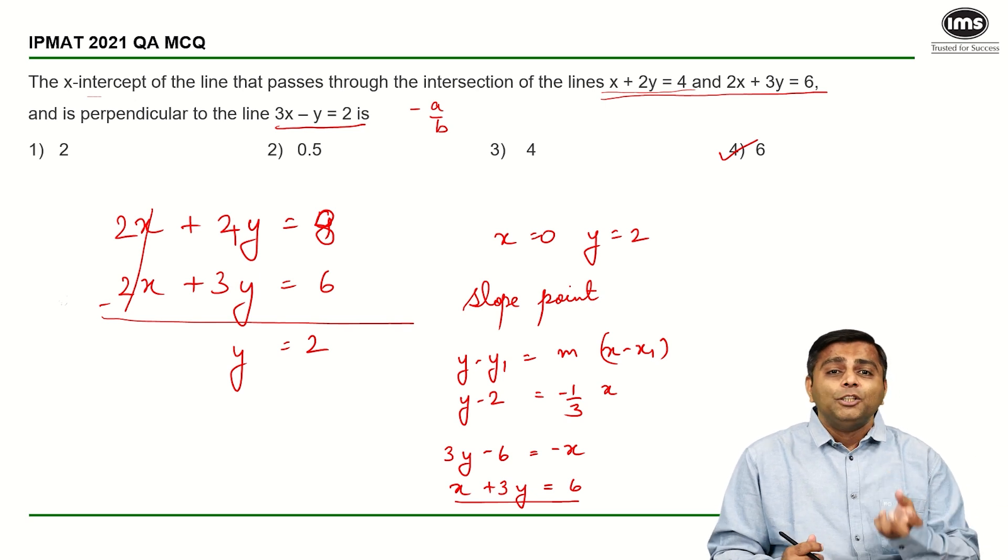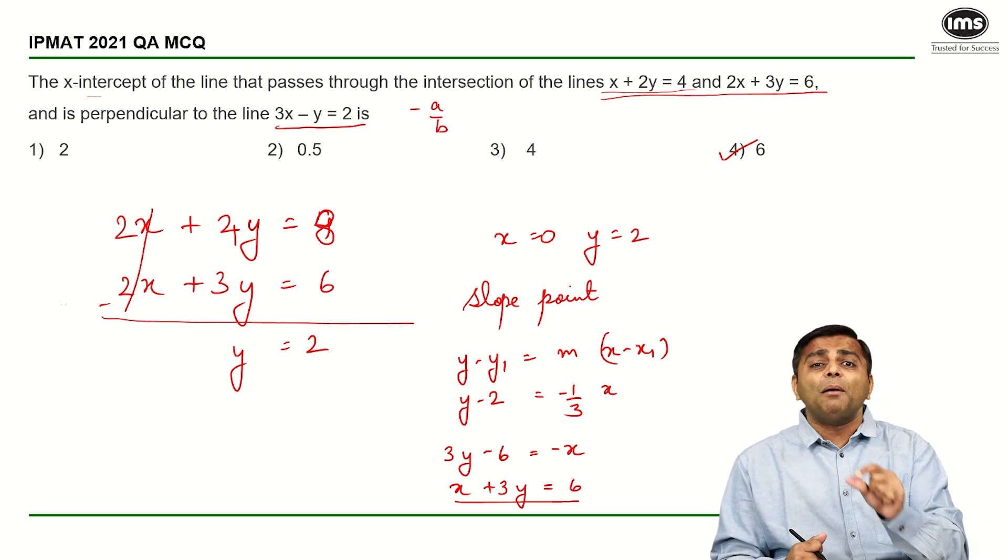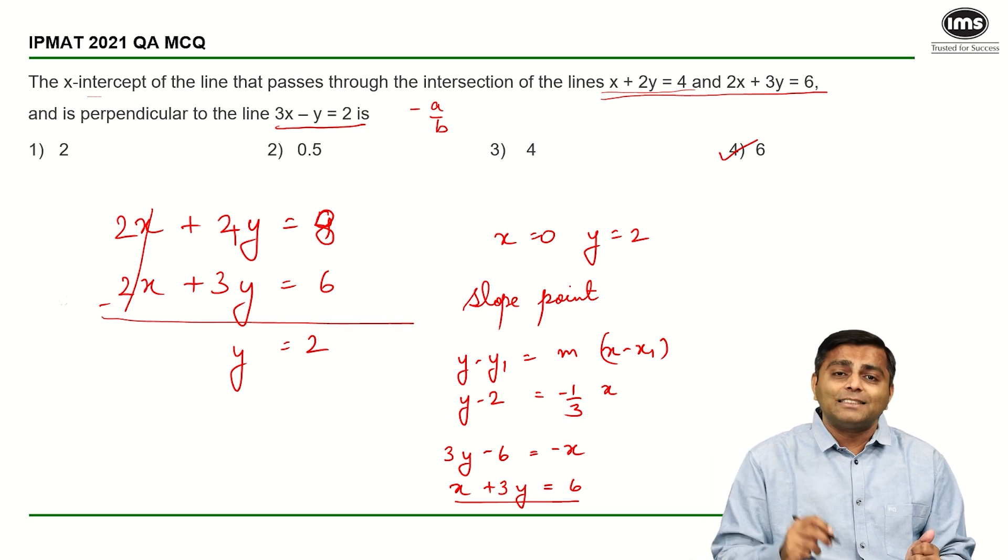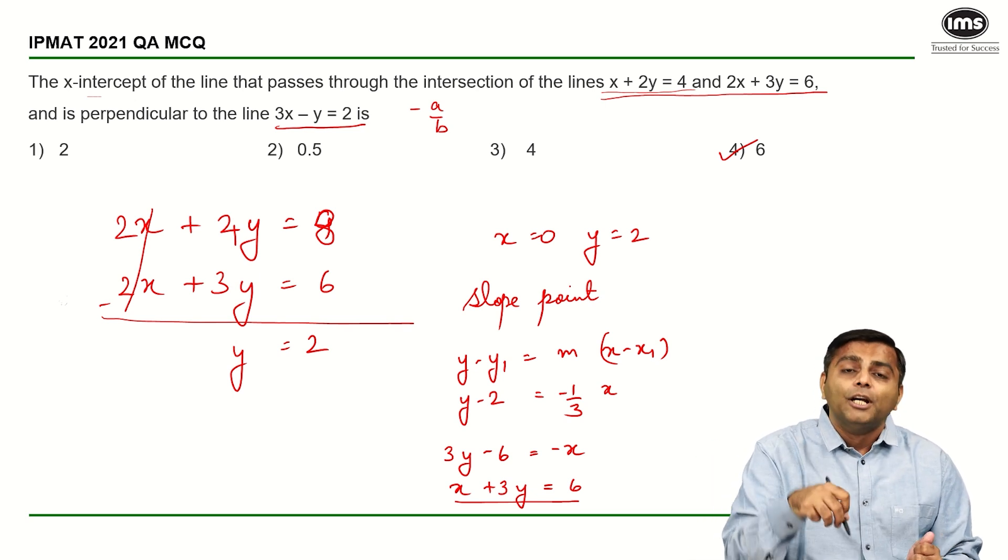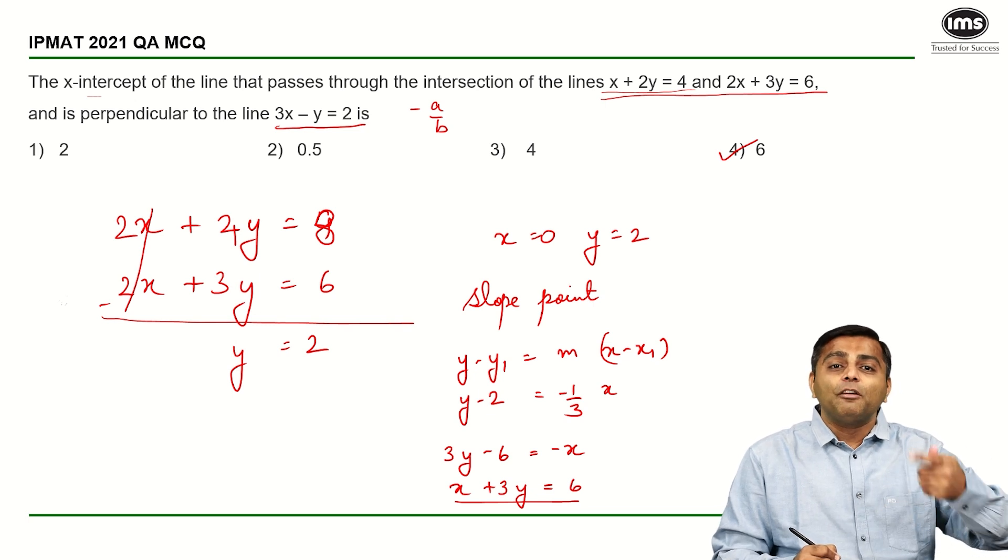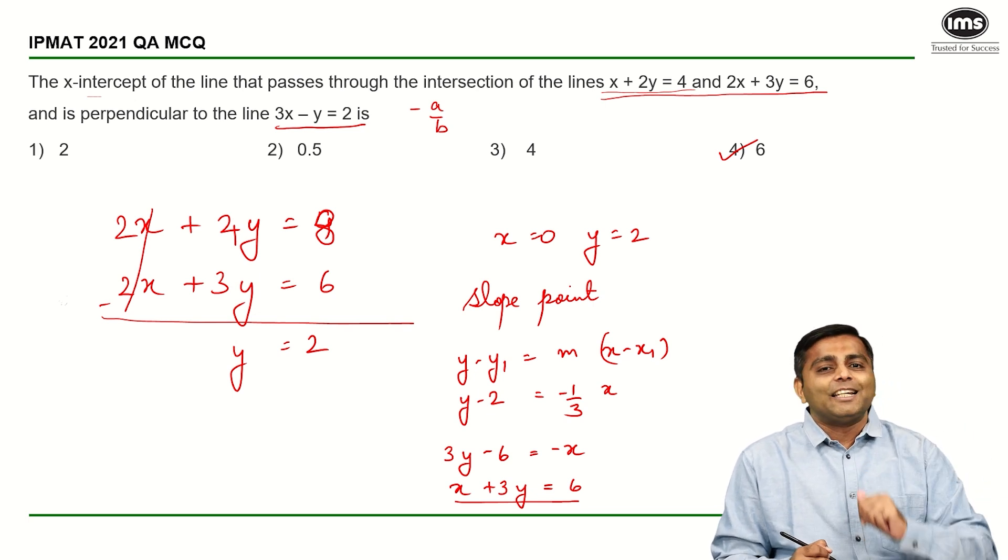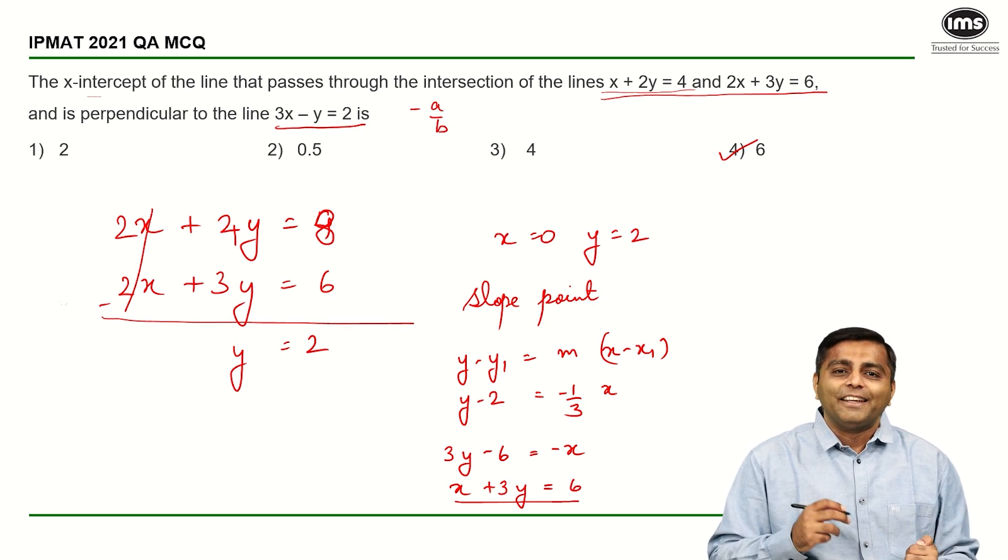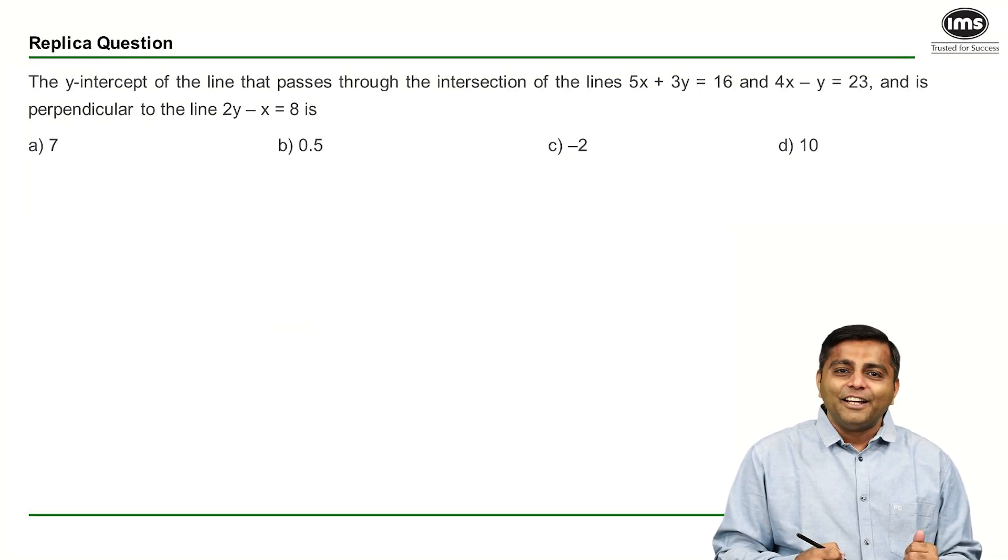So just by reading the question, you should have figured out what each data is meant for. The first two equations of the lines are meant for giving you the point through which your line is passing. The third equation is to give you the slope of the line that is being asked. So you know slope, you know point, you can do the slope point form and get to the y-intercept. So I hope this was clear enough.